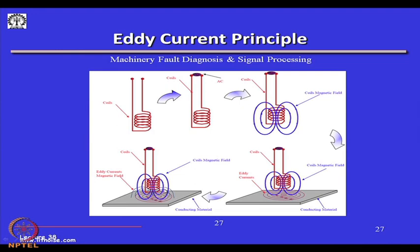By Lenz's law, the eddy current magnetic field will oppose the original field. If some way we can detect this difference in magnetic field — caused by eddy currents that are different due to a foreign inclusion, a defect, or a change in thickness — this gives us an indirect method to measure thickness, displacement of the coil from the conductive material, and so on.